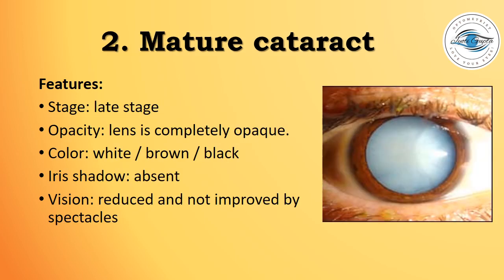Mature cataract is a late stage where the lens is completely opaque. The color of the lens is white, brown, or black, as seen in this photograph. The iris shadow is completely absent in mature cataract, and vision is reduced and cannot be improved by any spectacle correction.